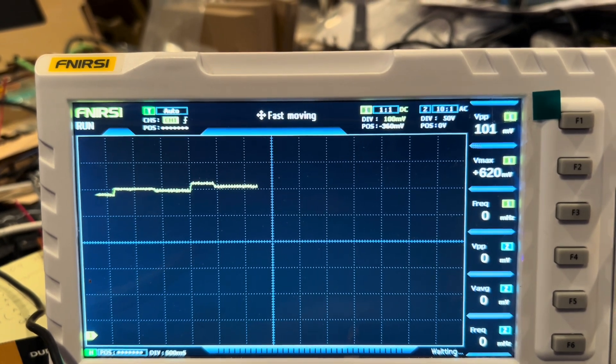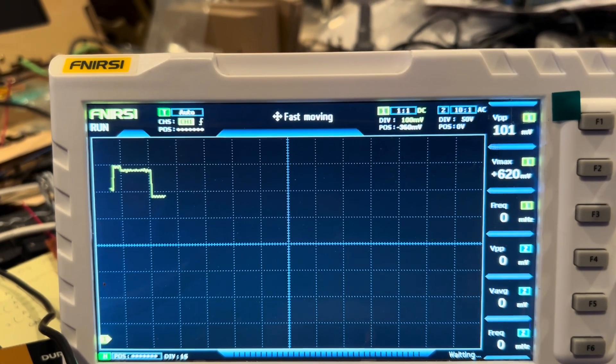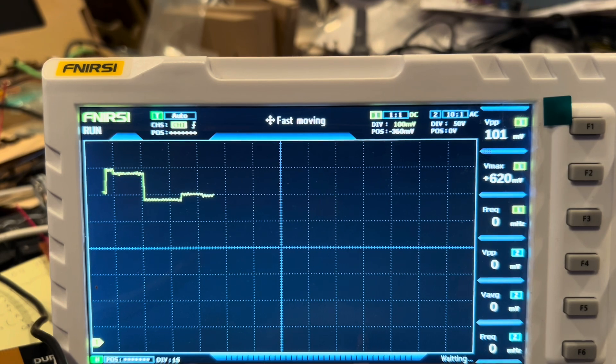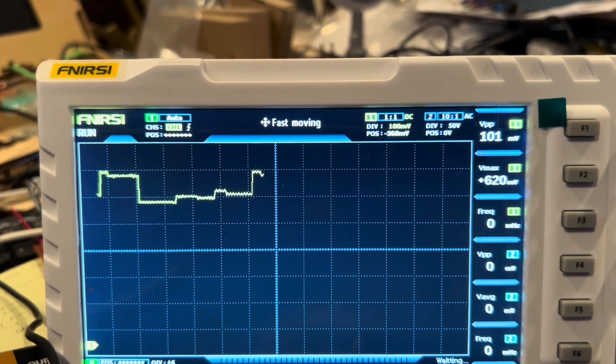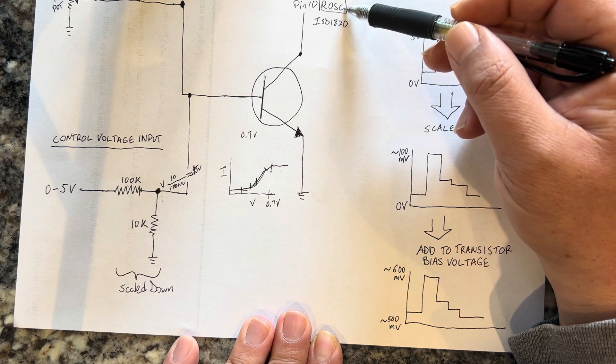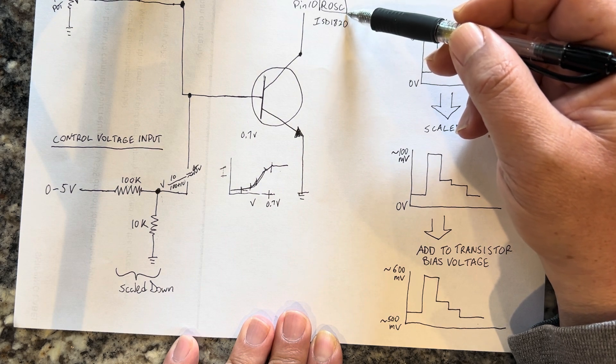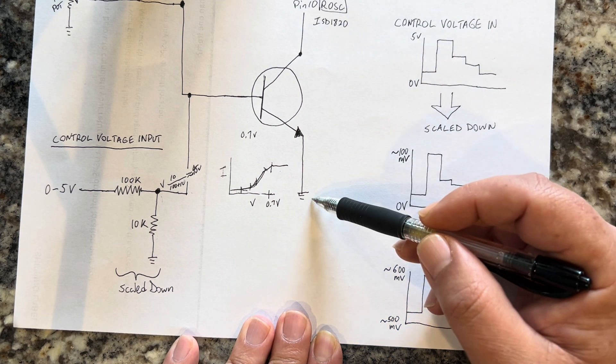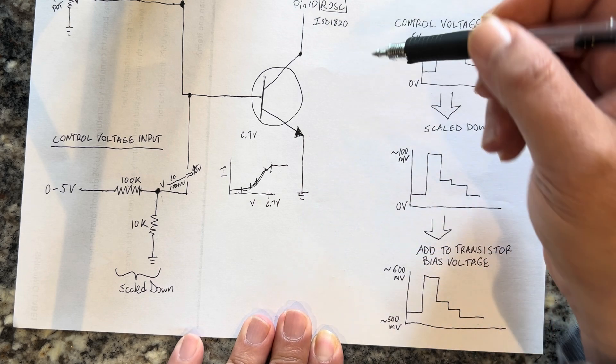This is the original zero to five volt control voltage scaled down and added to the bias voltage of the transistor. This is the voltage range you get on the oscilloscope that gets connected to pin 10, which is the ROSC pin, and this gets connected to ground.